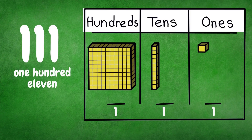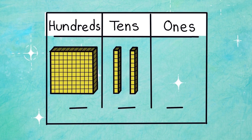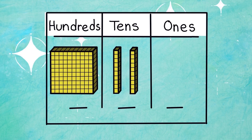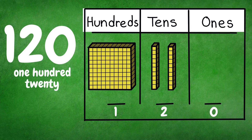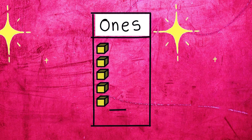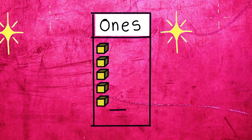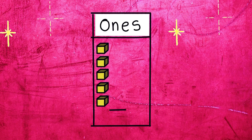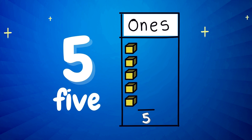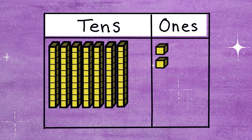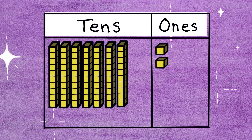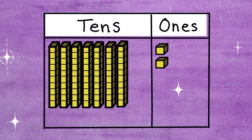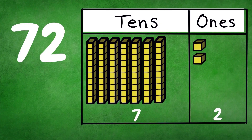Next number. It has a 100 block, 210, and 01. It is 120. Next number. It has one digit and five ones. Say it with me — number five! High five! Next number. It has two digits: 7 tenths and two ones. 72.